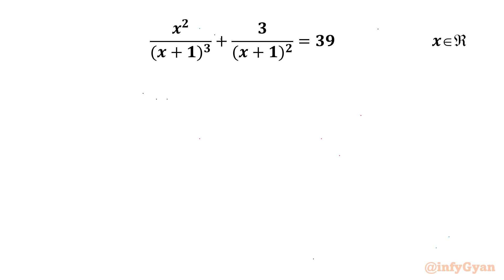Welcome back to Infigyan, my dear friends. In this video we have another very interesting question from rational equations. Our equation is x² over (x+1)³ plus 3 over (x+1)² equal to 39, and we are going to calculate all real solutions.